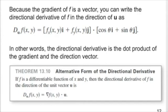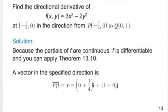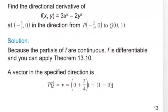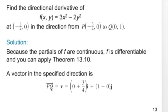Now let's look at an example. In this example, the unit vector for the required direction is not given directly. Instead, we have two points in space: point P at (−3/4, 0) and point Q at (0, 1). From these two points we can calculate the vector PQ, and from that vector we can calculate the unit vector.